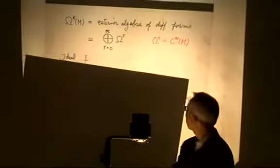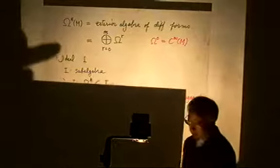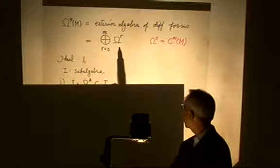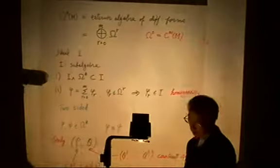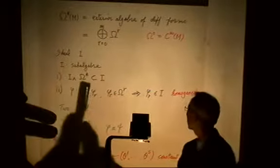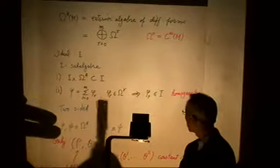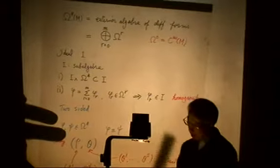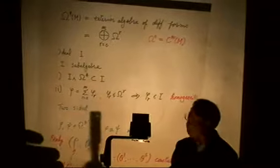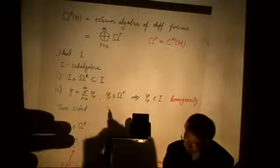Let us briefly review the terminologies. Let omega-star be the exterior algebra of differential forms, and omega-r be the module of r-forms. By ideal, I mean the subalgebra such that i times omega-star is contained in omega, and for any element of i, each r-form component belongs to i. That is called the homogeneity condition.